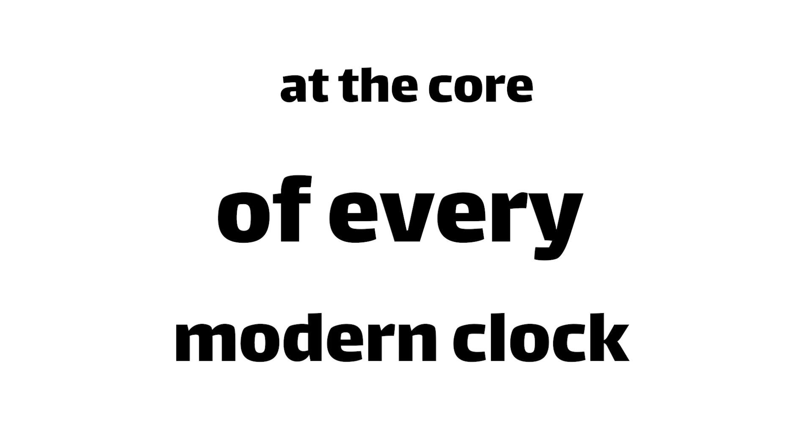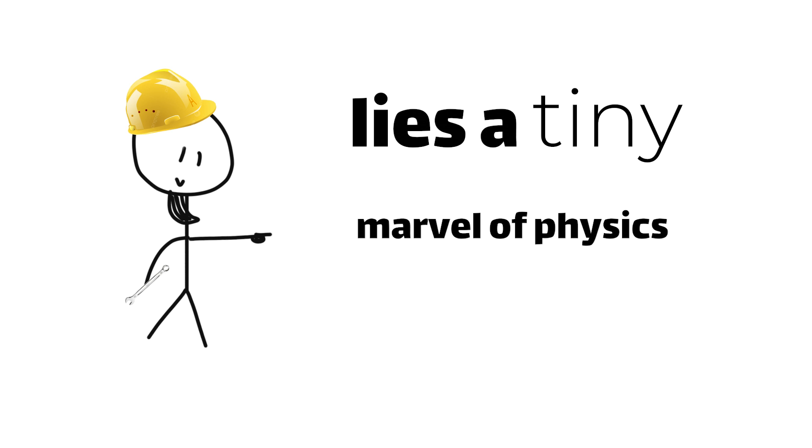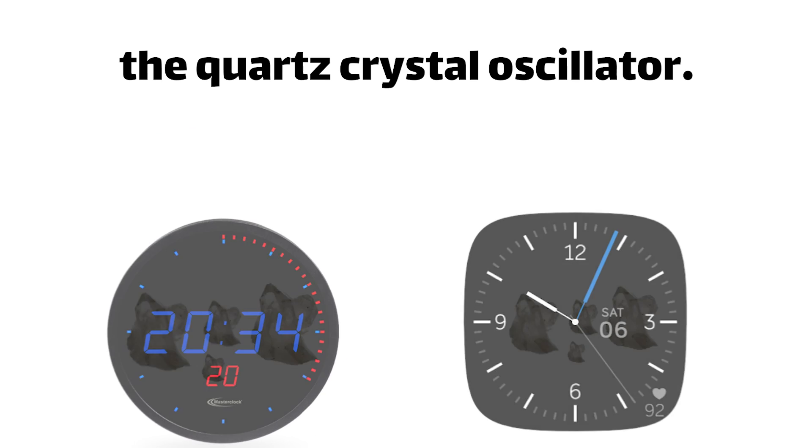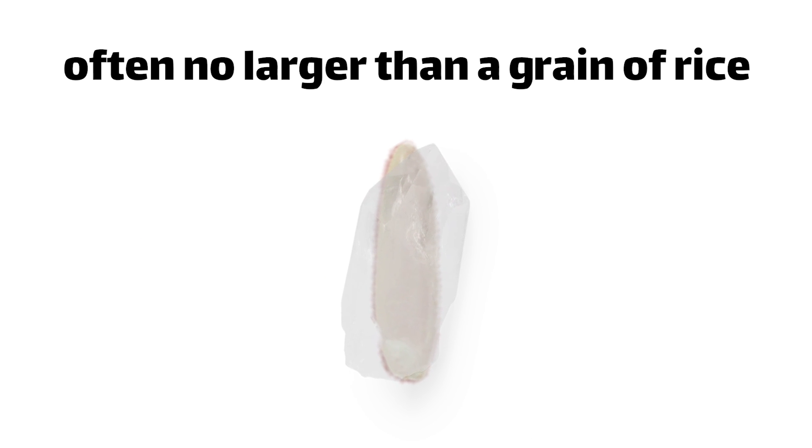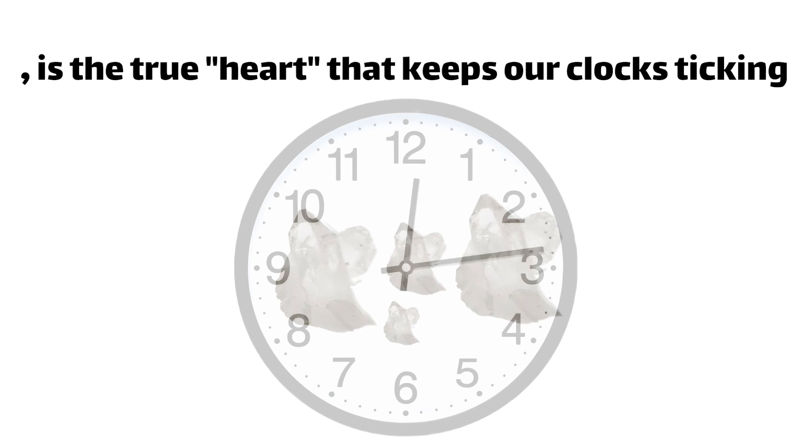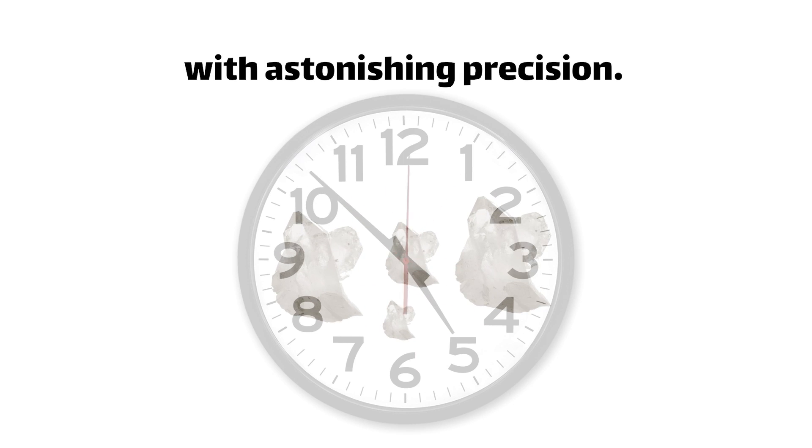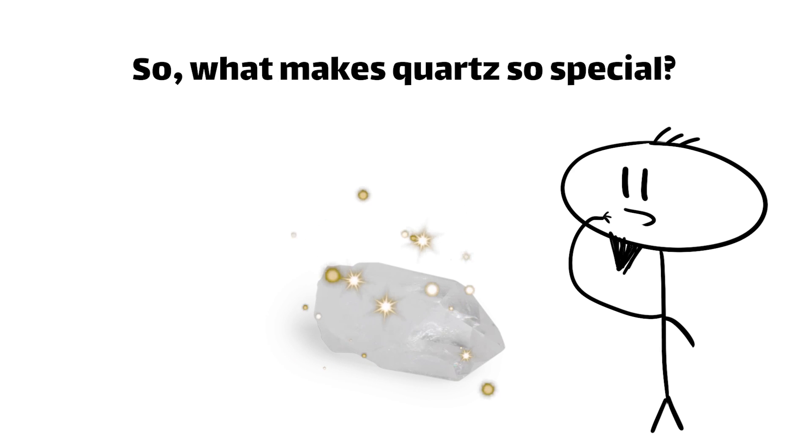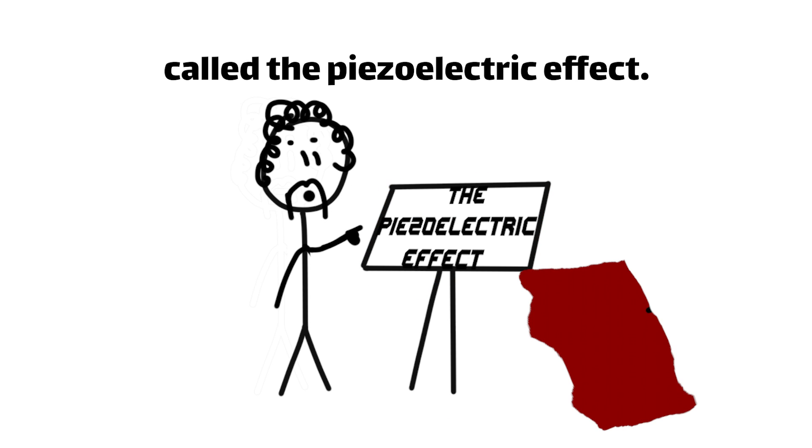At the core of every modern clock, whether analog or digital, lies a tiny marvel of physics and engineering, the quartz crystal oscillator. This unassuming component, often no larger than a grain of rice, is the true heart that keeps our clocks ticking with astonishing precision. So what makes quartz so special? The answer lies in a fascinating phenomenon called the piezoelectric effect.